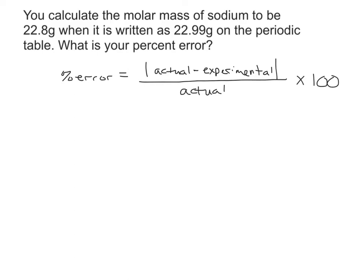The actual in this situation is the 22.99 grams because it's on the periodic table. As long as you have a periodic table, it's common knowledge. We all know that the molar mass of sodium is 22.99 grams. This is what we got in an experiment, theoretically. So we're going to figure out how off we were. What is our percent error?